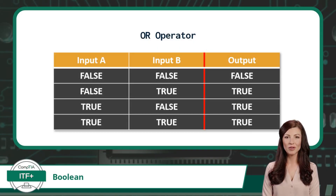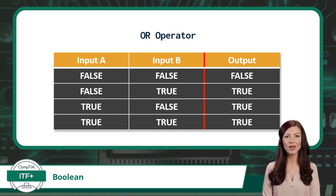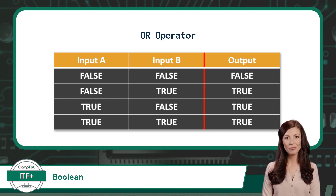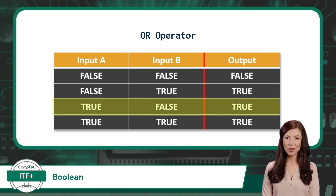Now for the logical OR operator. The OR operator returns true if any input is true, and returns false only when both inputs are false. Let's try an example and compare the inputs to the OR operator table. The first conditional statement will be: my shirt is pink — that is a true statement, so we will use true for input A. The second conditional statement will be: my hair is blue — that is a false statement, so we will use false for input B. Using the OR operator table, we can see our resulting Boolean value would be true, as at least one of our inputs evaluated to true.